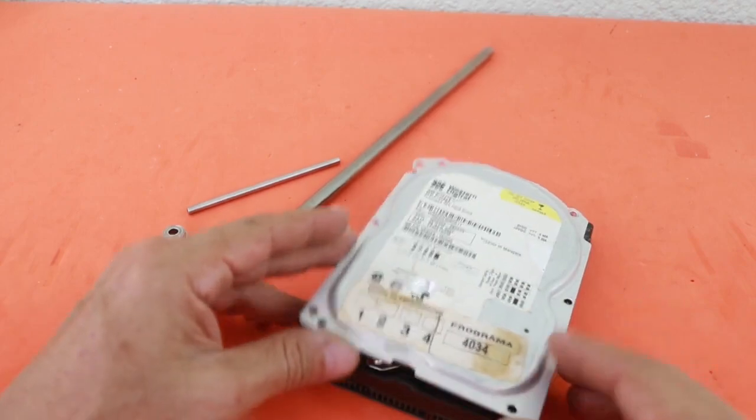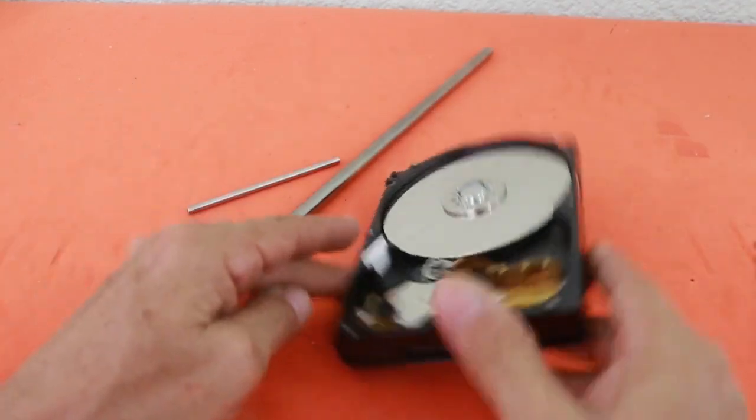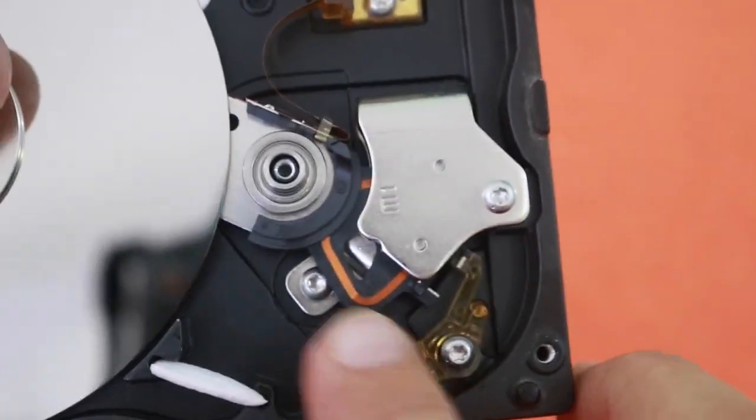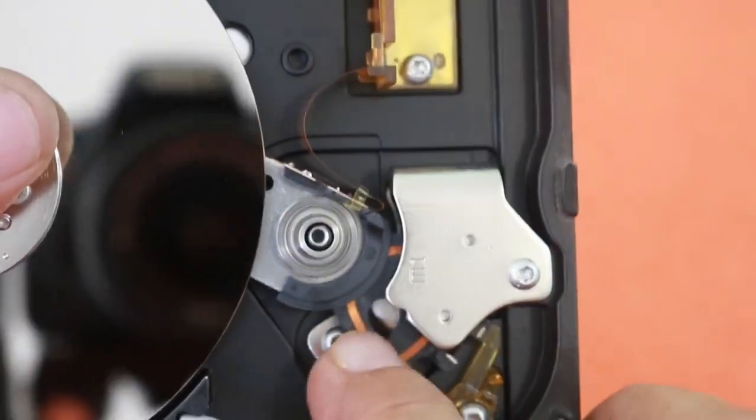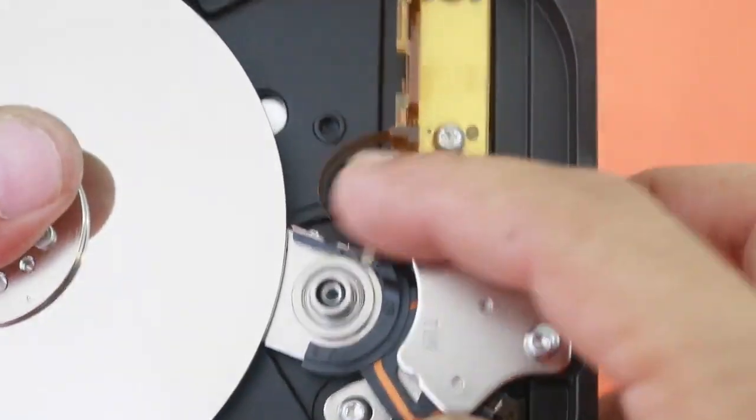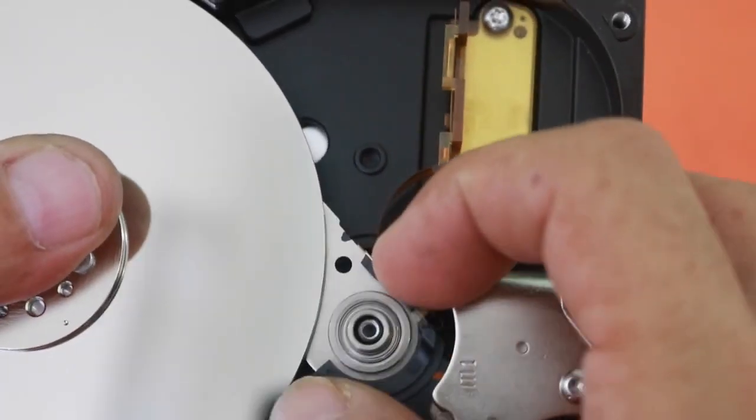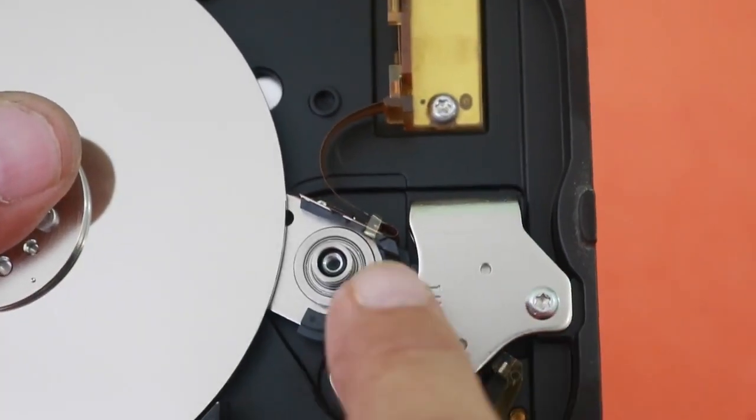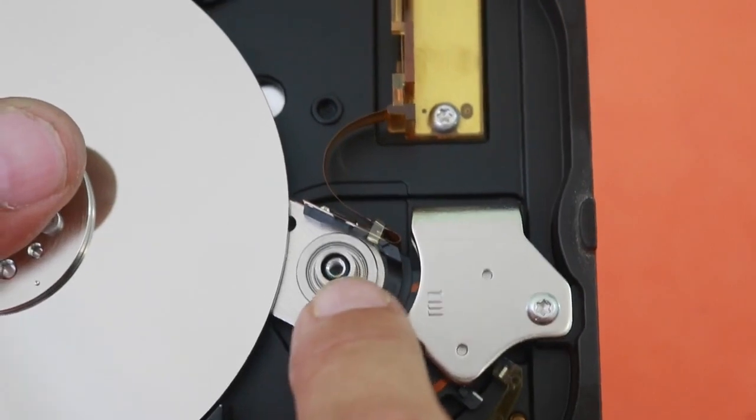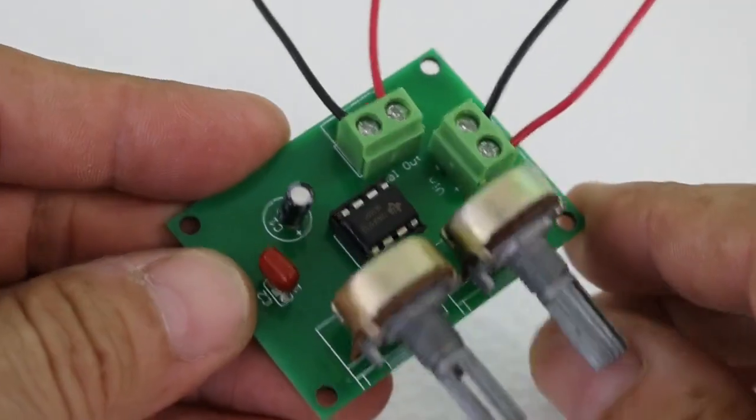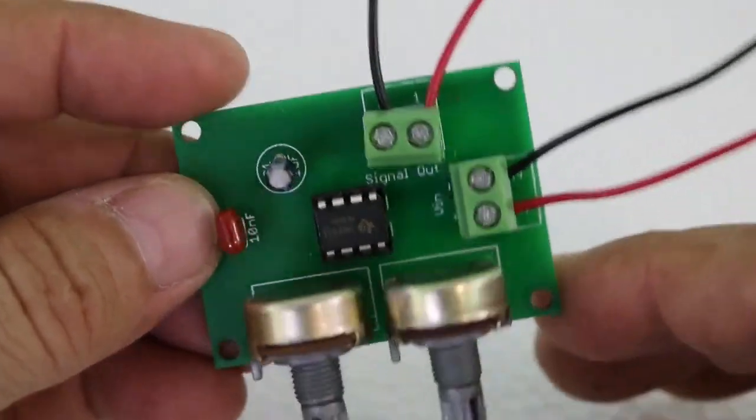When you open the drive, here you can see this part here. It is the reading head of the disc and it has this pivot, which is a very high quality bearing.